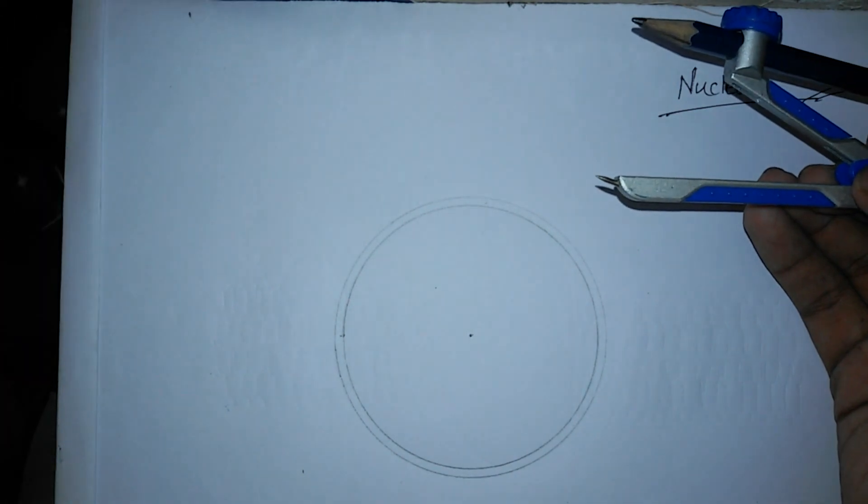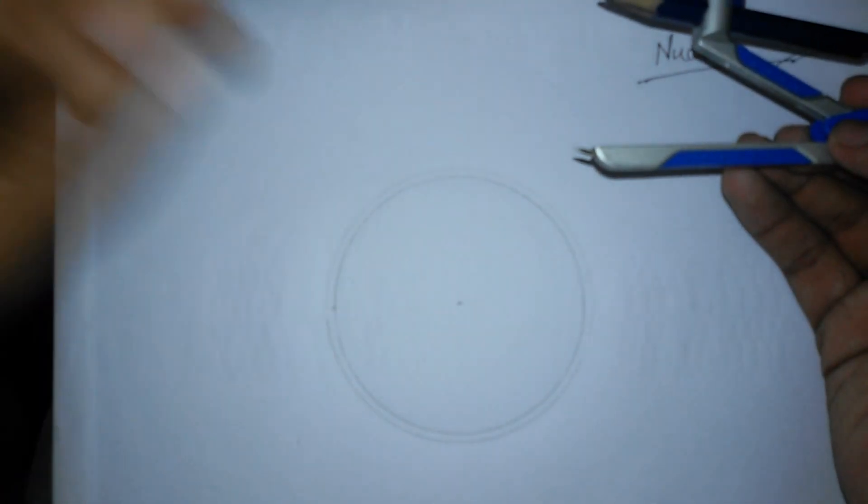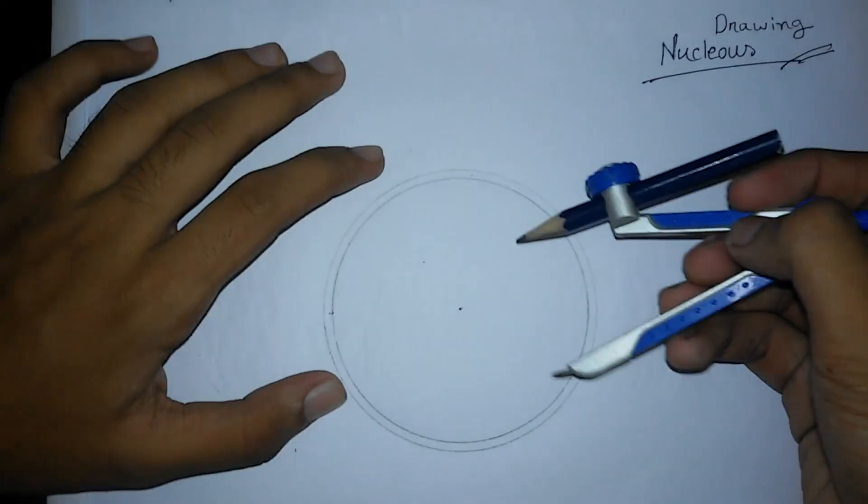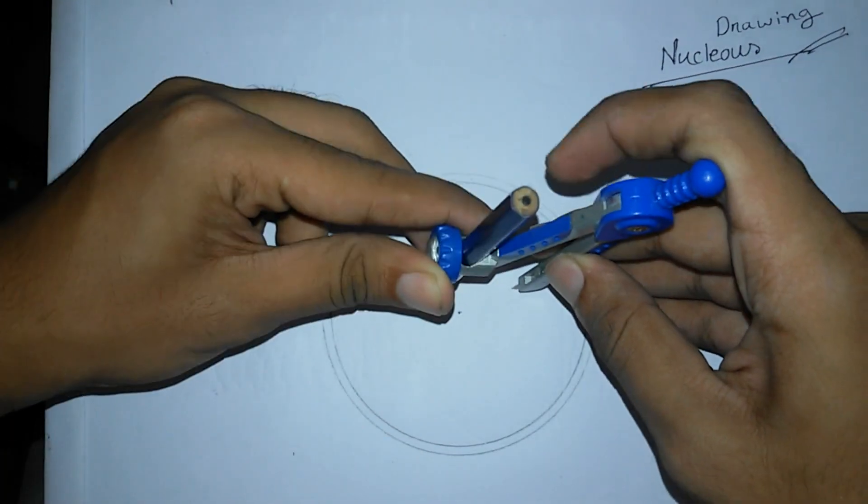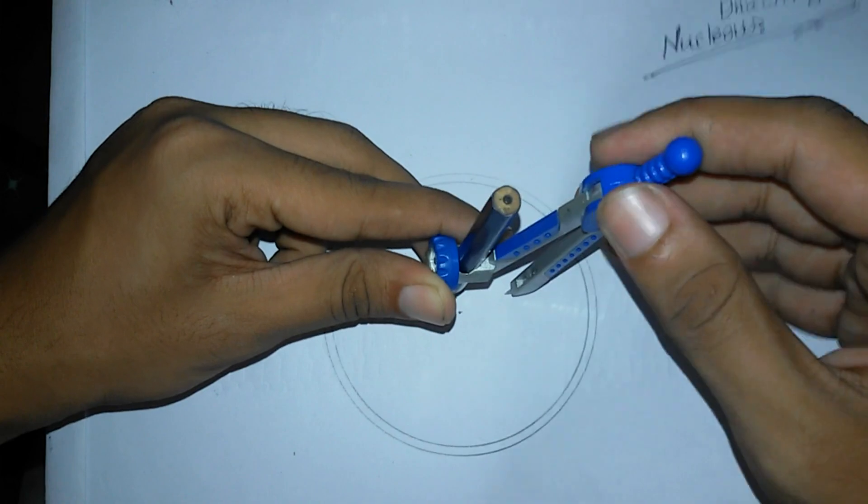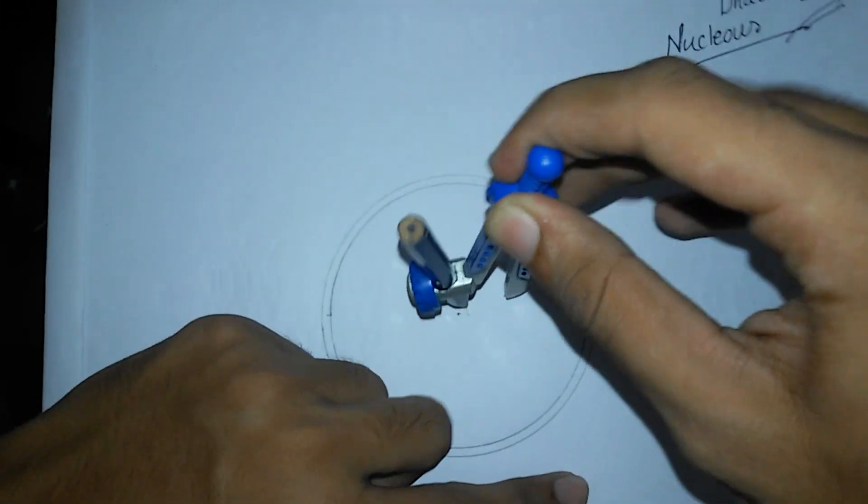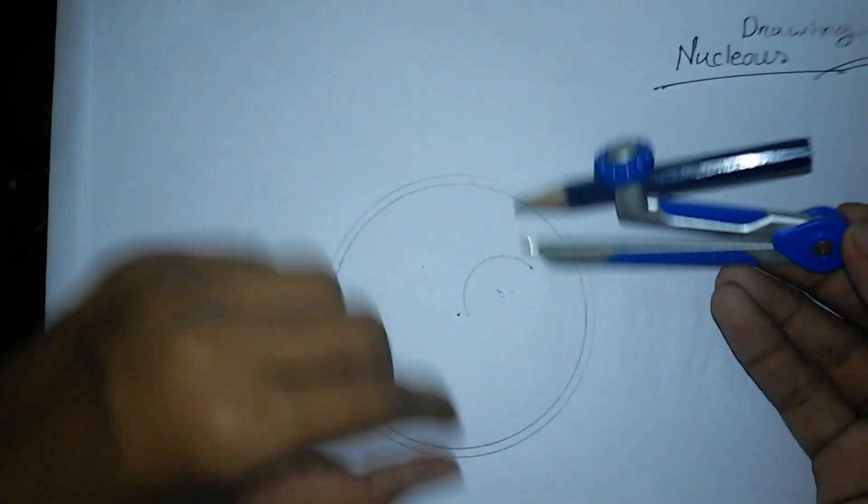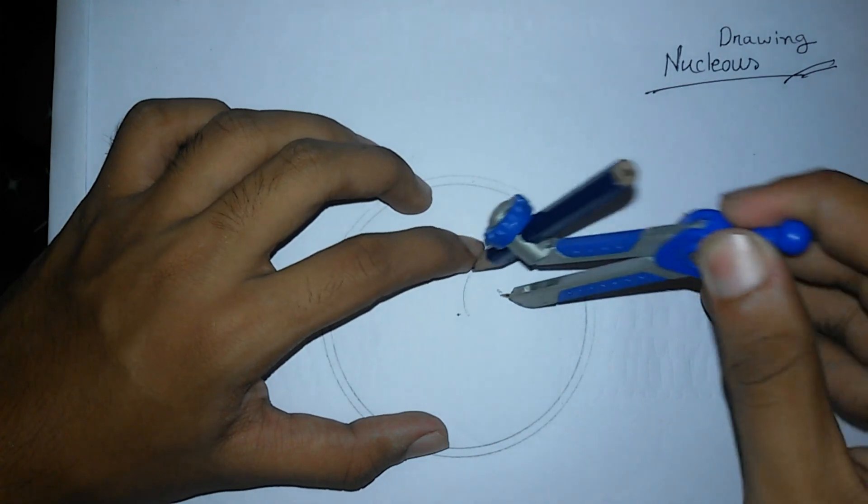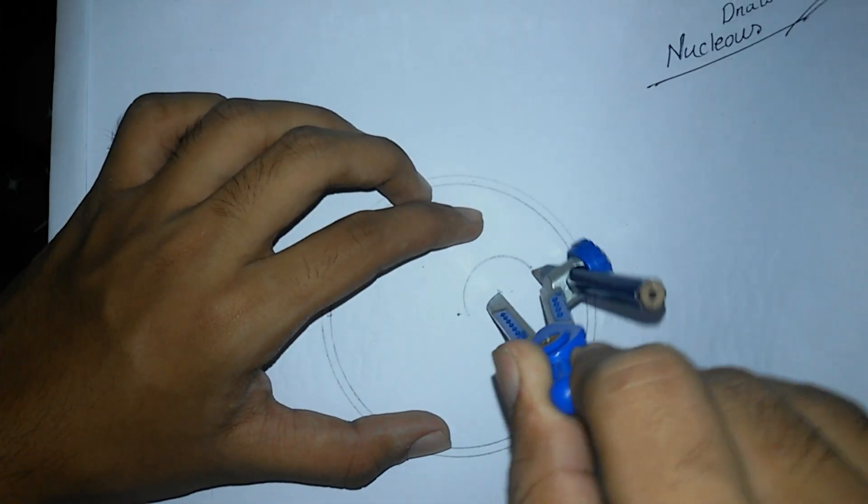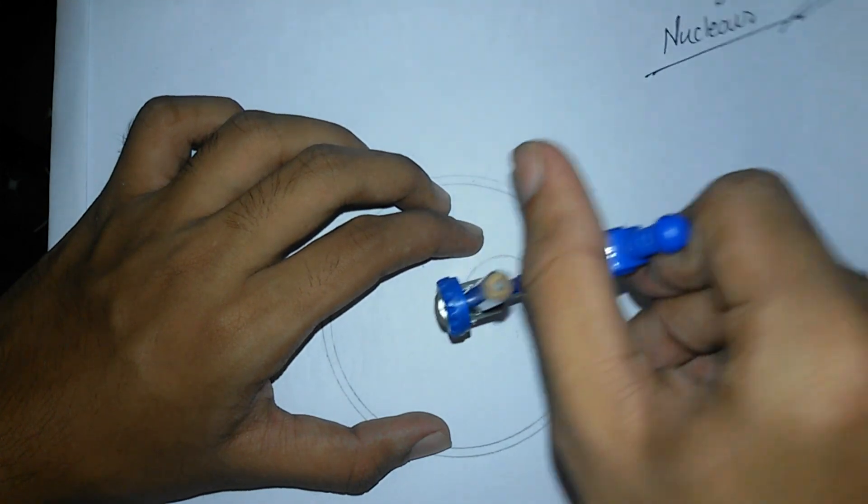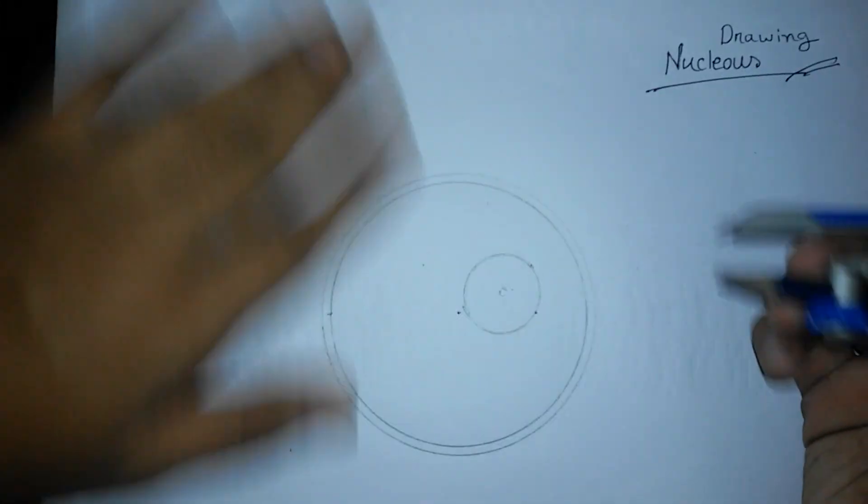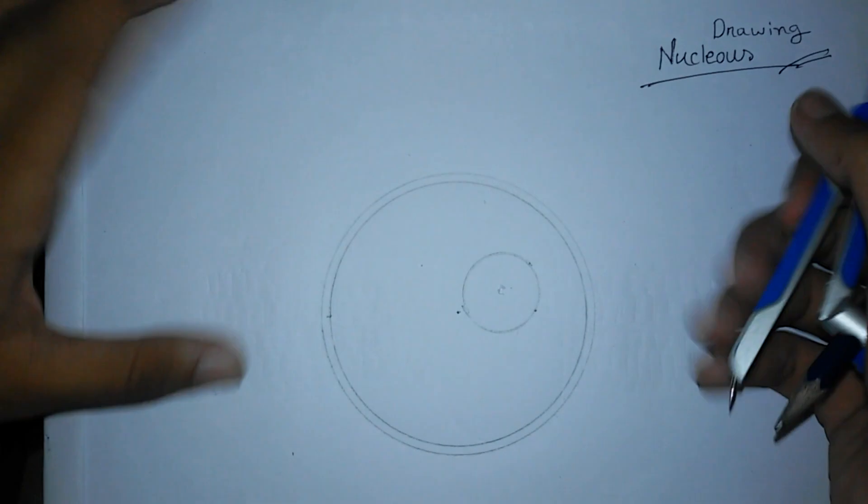After that you need to draw another small circle in here. This is the nucleolus. So this is another circle. That's the work with the compass.